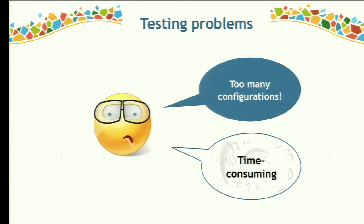Testing variability-intensive systems is extremely challenging due to the potentially huge number of derivable configurations under test. For example, Debian, a well-known Linux distribution reported as a variability-intensive system, has more than 37,000 packages. These packages can be configured to lead into billions of configurations. Testing each configuration is infeasible in many cases and time-consuming.